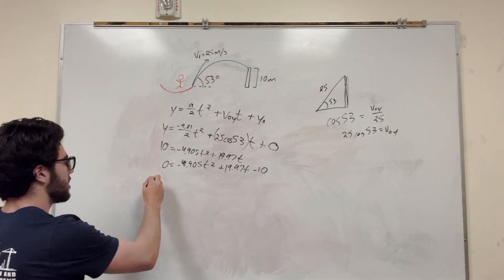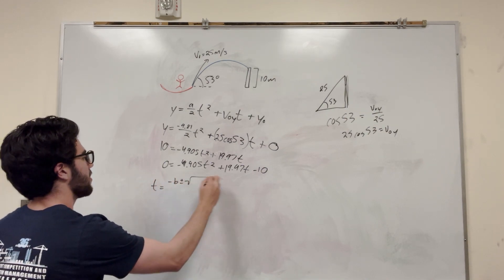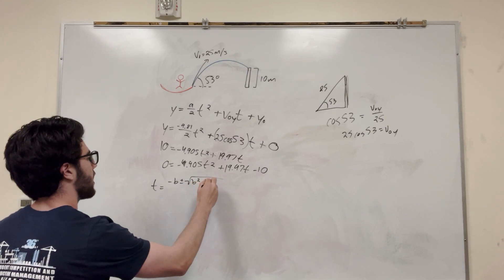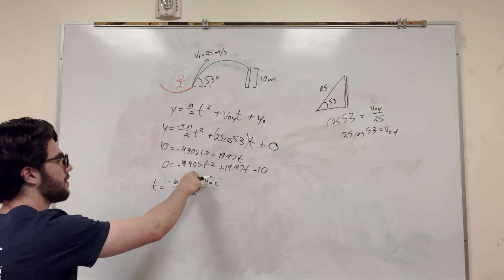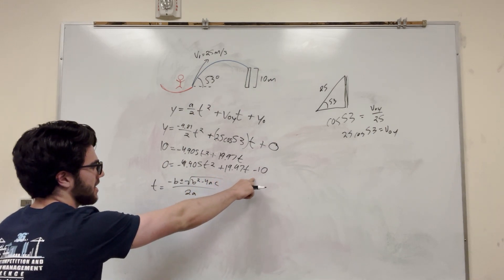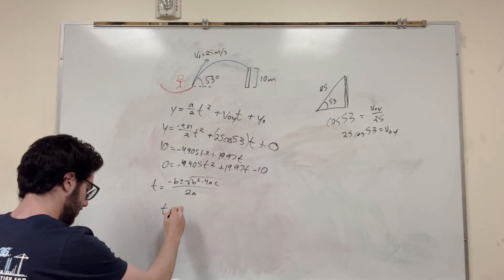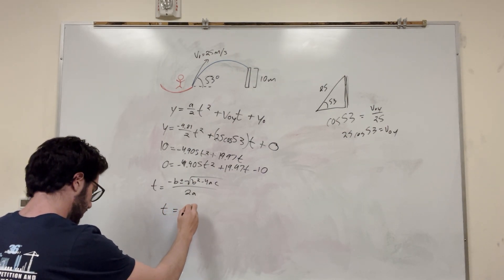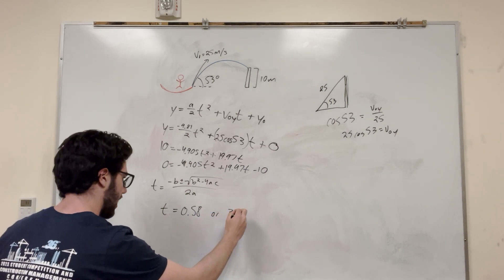Now what we can do is we can take these values and plug them into your quadratic equation. You know, the quadratic equation of t is going to be equal to negative b plus or minus is squared, b squared minus 4ac over 2a, where a is negative 4.905, b is 19.97, and c is negative 10. So if you plug these in, you're going to get these two values, t is equal to either 0.58 or 3.49 seconds.